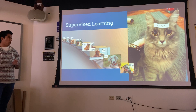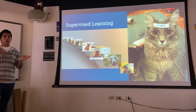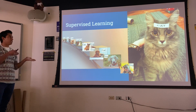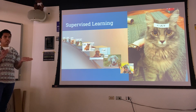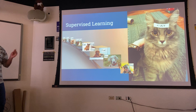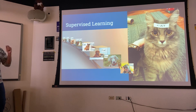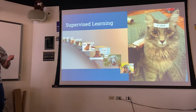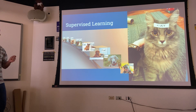The network sees those images, takes an initial guess, and then uses the label to figure out: my guess was wrong — how can I make my guess better next time? That's how training works.